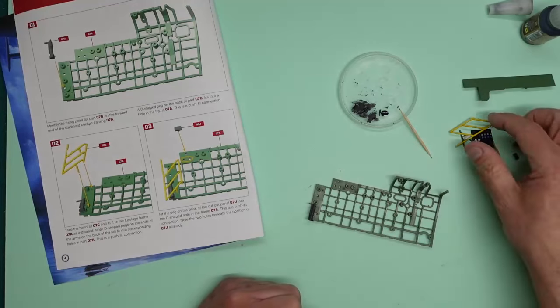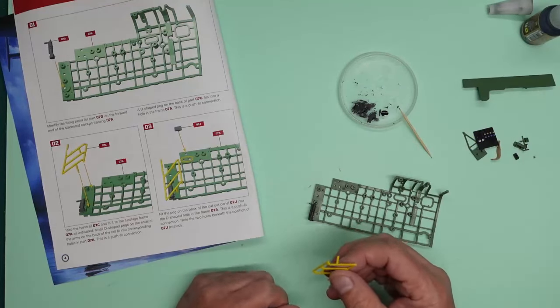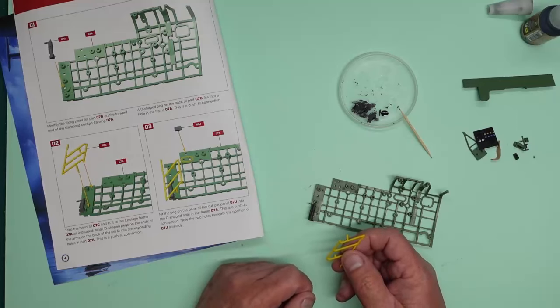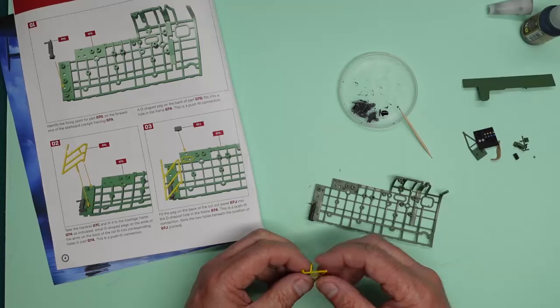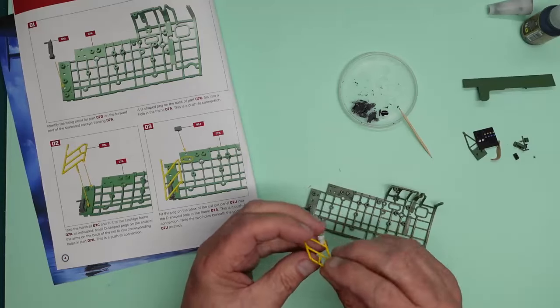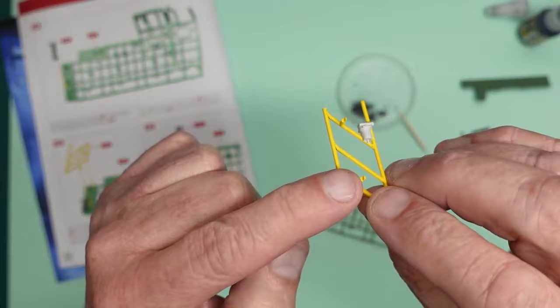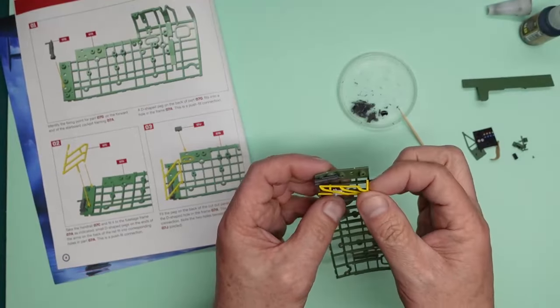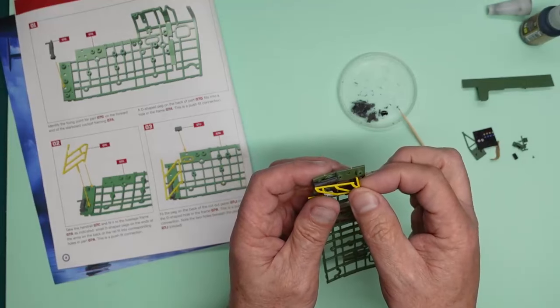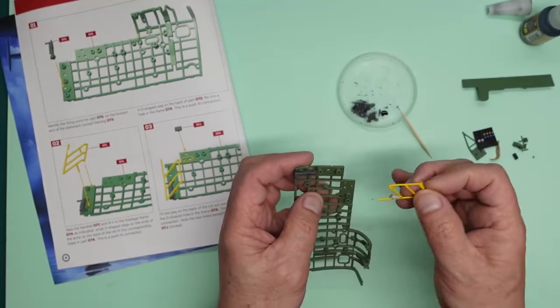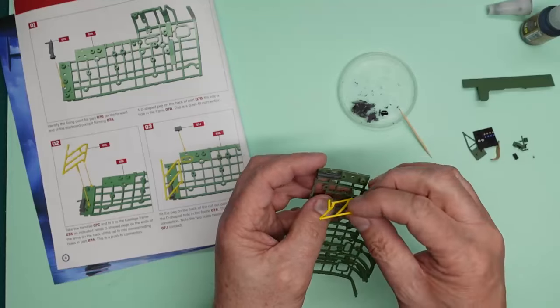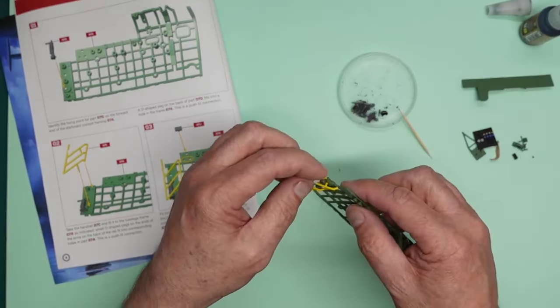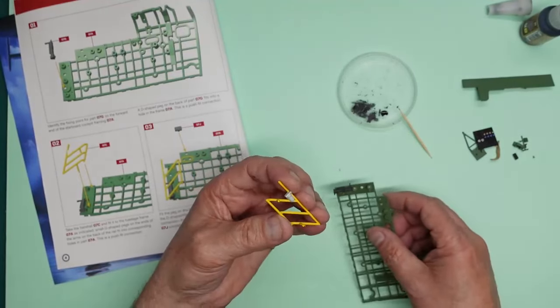Take the handrail 07C and fit in the fuselage frame as indicated. Small D-shaped pegs on the ends of the arms on the back of the rail fit into corresponding holes. This is a push fit connection. So we've got the D-shaped pins on here. One, two. You can see those there. And they are going to go into these two holes. One, two. So I don't know how they're going to fit. If they're going to be tight. Or if I've got the rail upside down even.